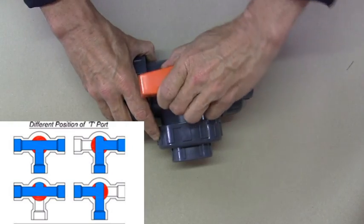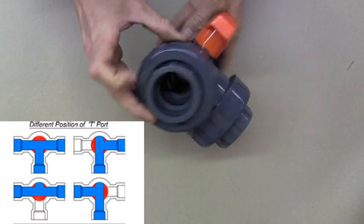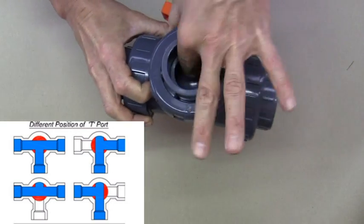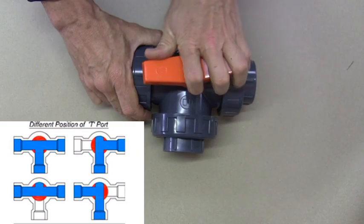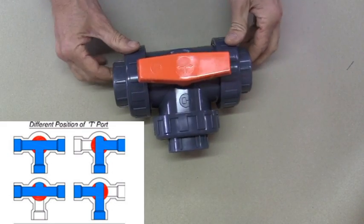If we turn the handle around completely then the fluid can pass all the way through but it can't pass out of this side, so it gives us every single option we can think of on a T-port valve.